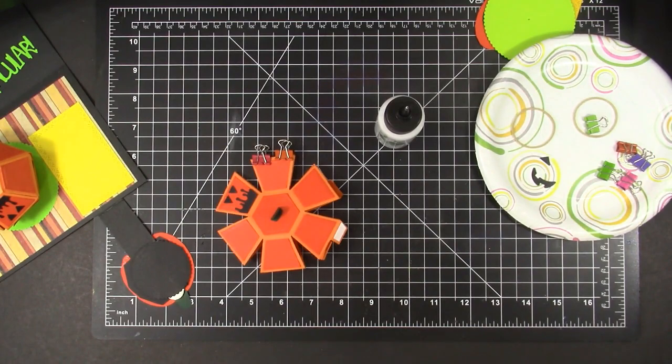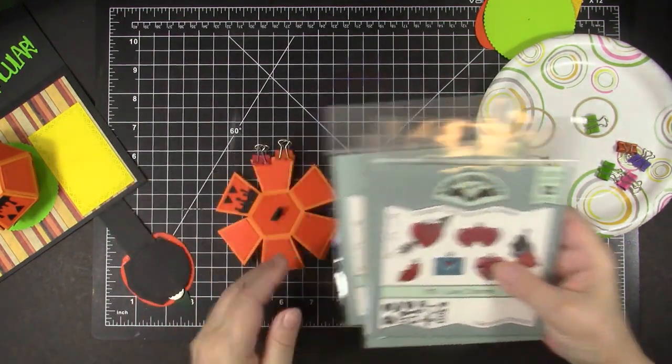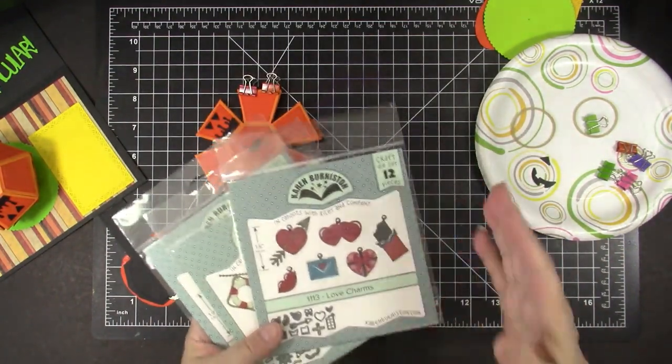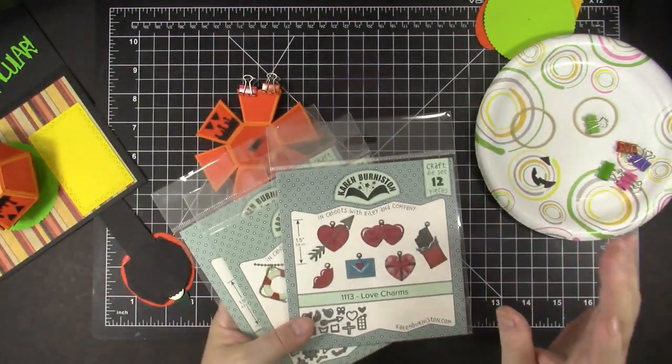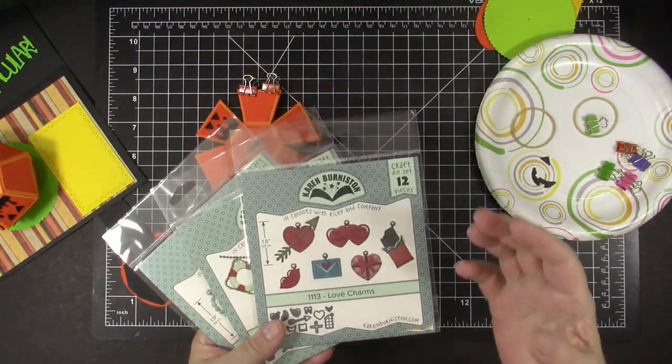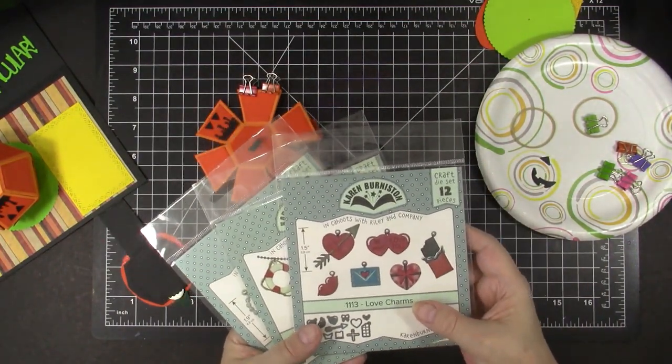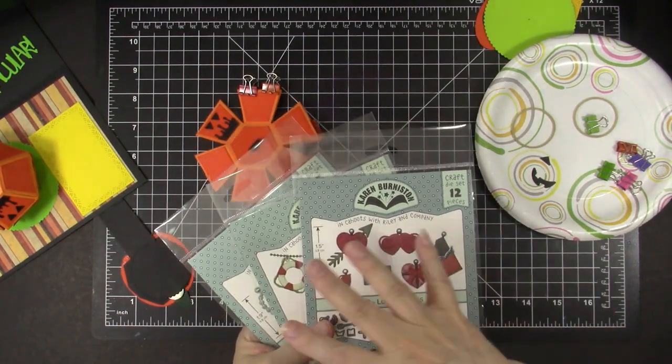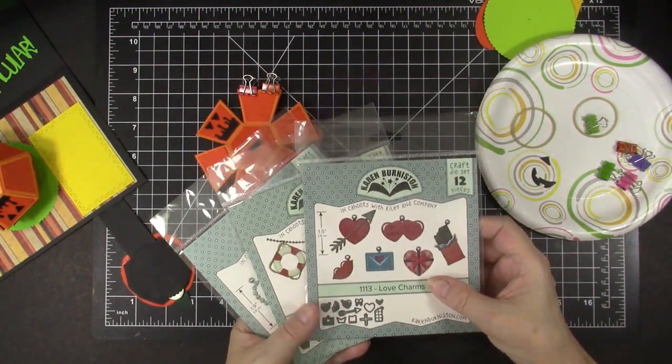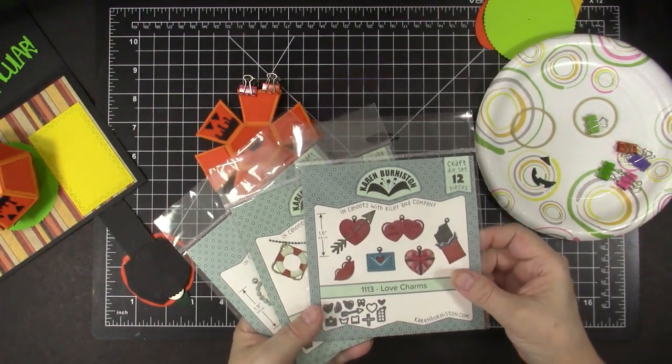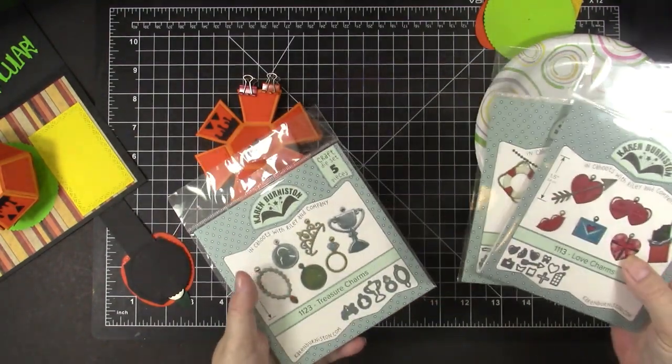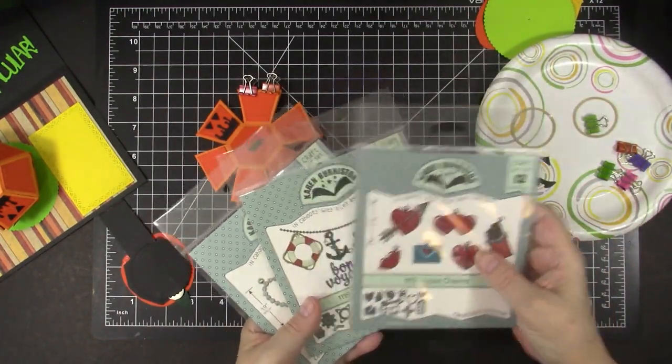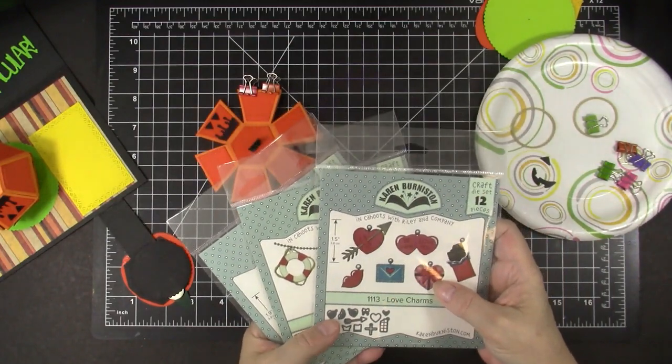I have, because I was using Karen Burniston's dies, and I'm a huge Karen Burniston fan, I thought it would be perfect to give away three Karen Burniston die sets as my prize. And the value of these three sets is over $50. There's the Love Charms, the Cruise Charms, and the Treasure Charms. And they could be used on any type of card and are very fun.